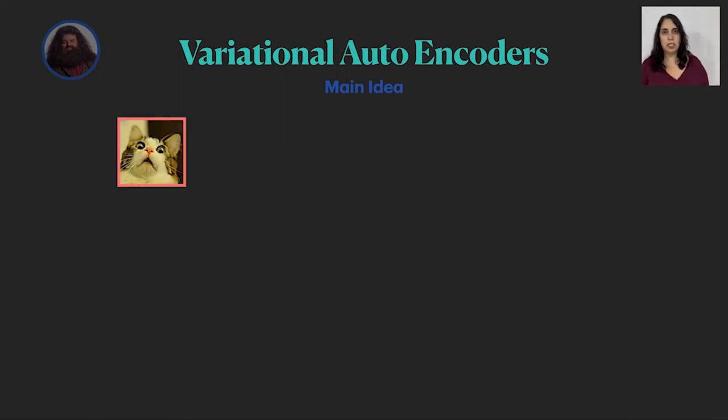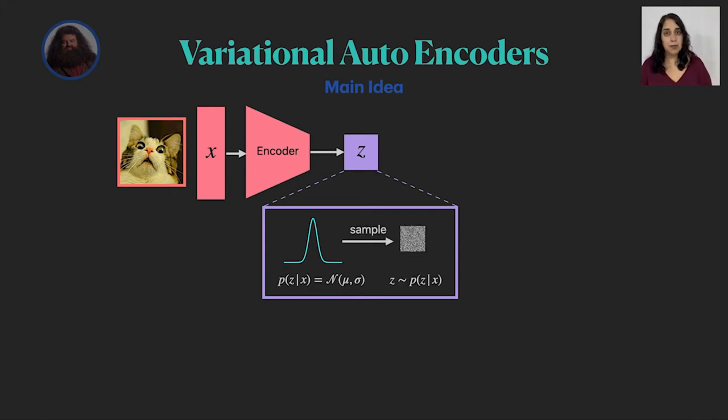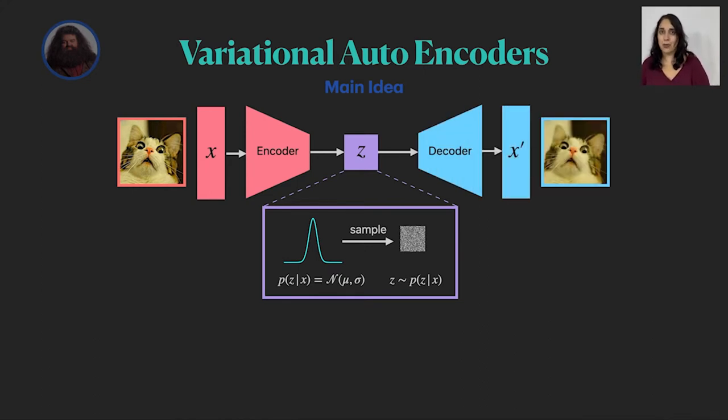We start with an image X and use an encoder to encode it into a latent space, which is the probability to generate Z given an input image X, usually modeled as a Gaussian, from which we can sample a specific Z and use a decoder to decode it into another image X tag, which hopefully looks like the one we started with.